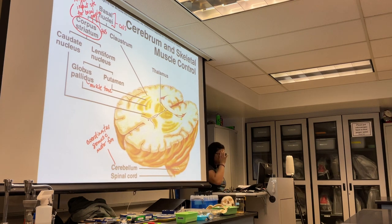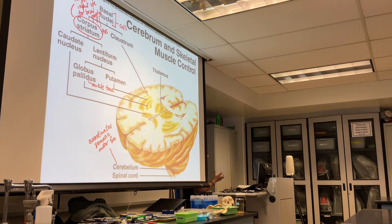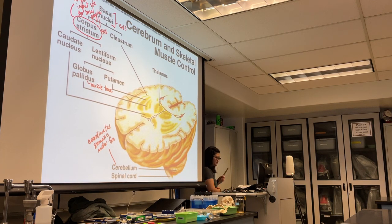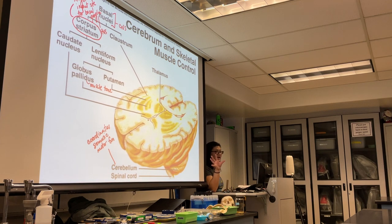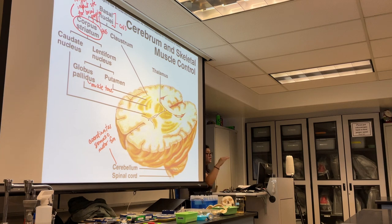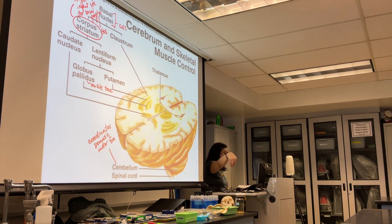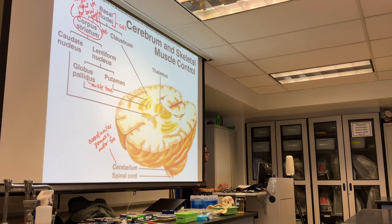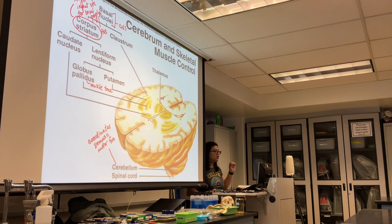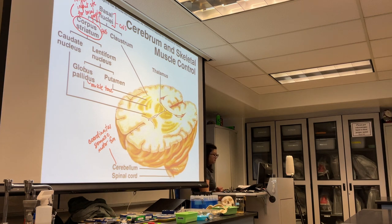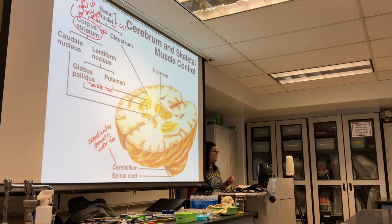This slide shows the basal nuclei locations. From a horizontal cross-section of the brain, looking at the inferior portion from the top down, your basal nuclei is comprised of two main structures: the corpus striatum and the claustrum. The corpus striatum is a major input site for structures called the basal ganglia.